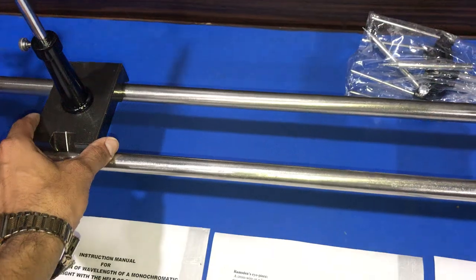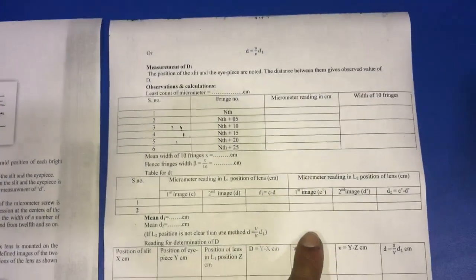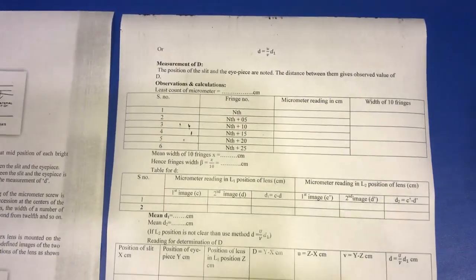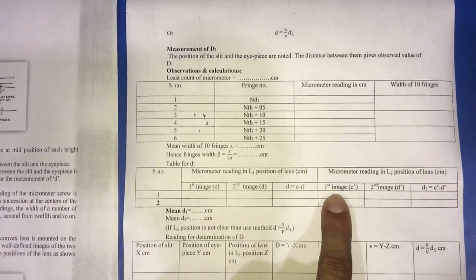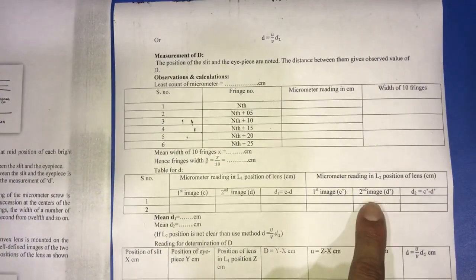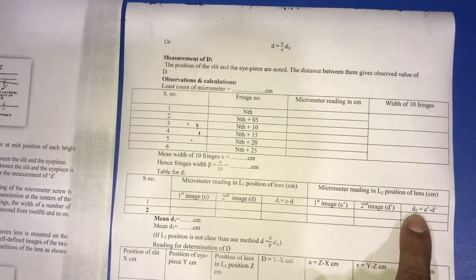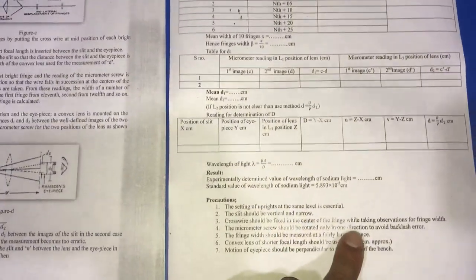Now we again change the position of this lens and we again get the two light sources very clearly. Again calculate the value of distance between the two lights and take the reading of micrometer for first image, second image, and calculate the distance d2.